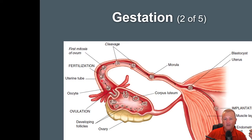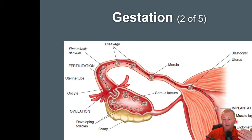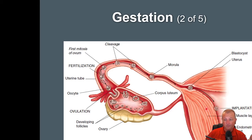But this is where those tubular pregnancies can happen — right here in the fallopian tube. For some reason, if that egg gets caught up in the fallopian tube, that can be a big problem. And then where we want it to go is right down here in the uterus, along the endometrial wall. That's ideal.